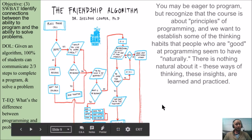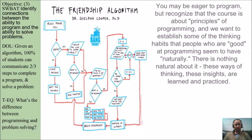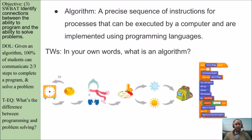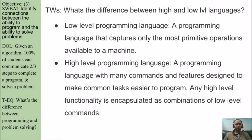If you're very interested in programming, I hope we will have the AP Computer Science A course next year, in which we will learn extensively how to program in Java. An algorithm is a precise sequence of instructions for processes that can be executed by a computer, implemented using programming languages. The think-write-share on this slide is: in your own words, what is an algorithm? Another think-write-share: what's the difference between high and low-level languages?